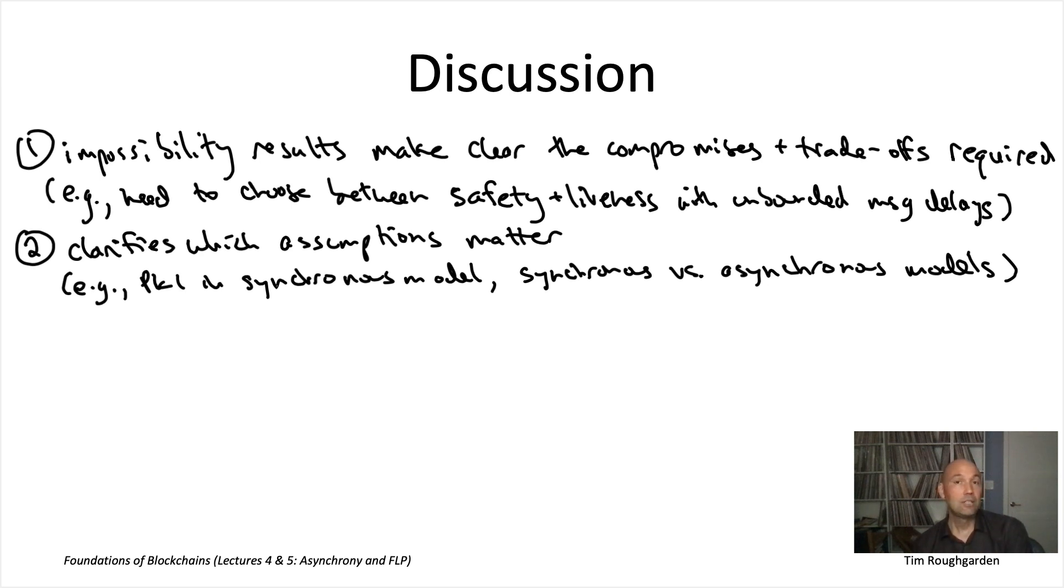Consensus protocols are fundamentally more powerful if you can pull off the trusted setup assumption with common knowledge public keys. The takeaway from those two lectures was that cryptography matters for consensus and trusted setups matter for consensus.